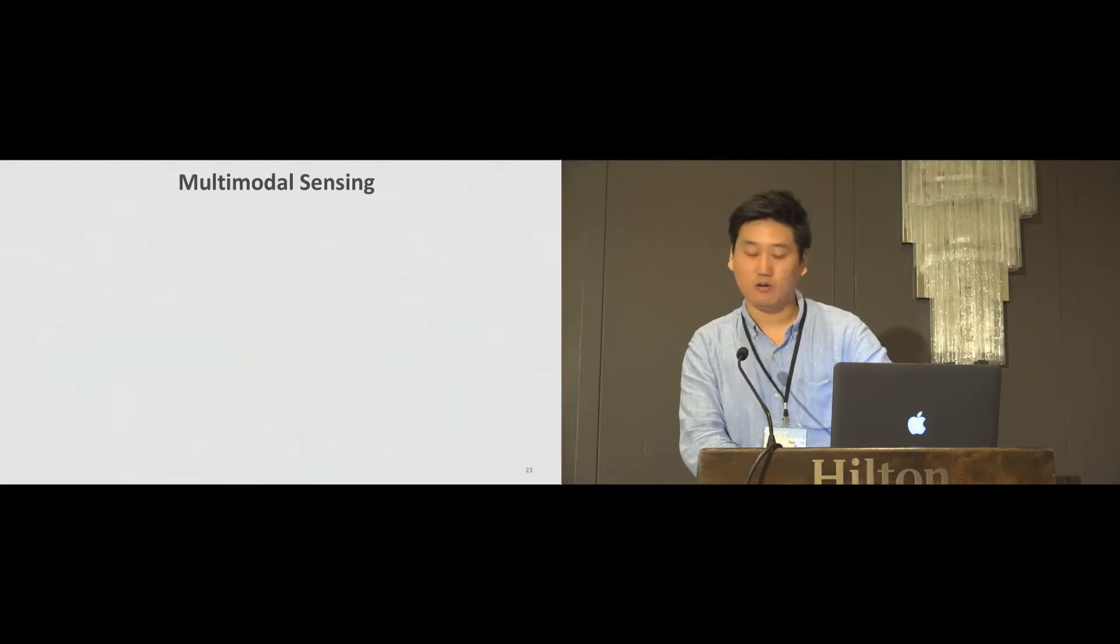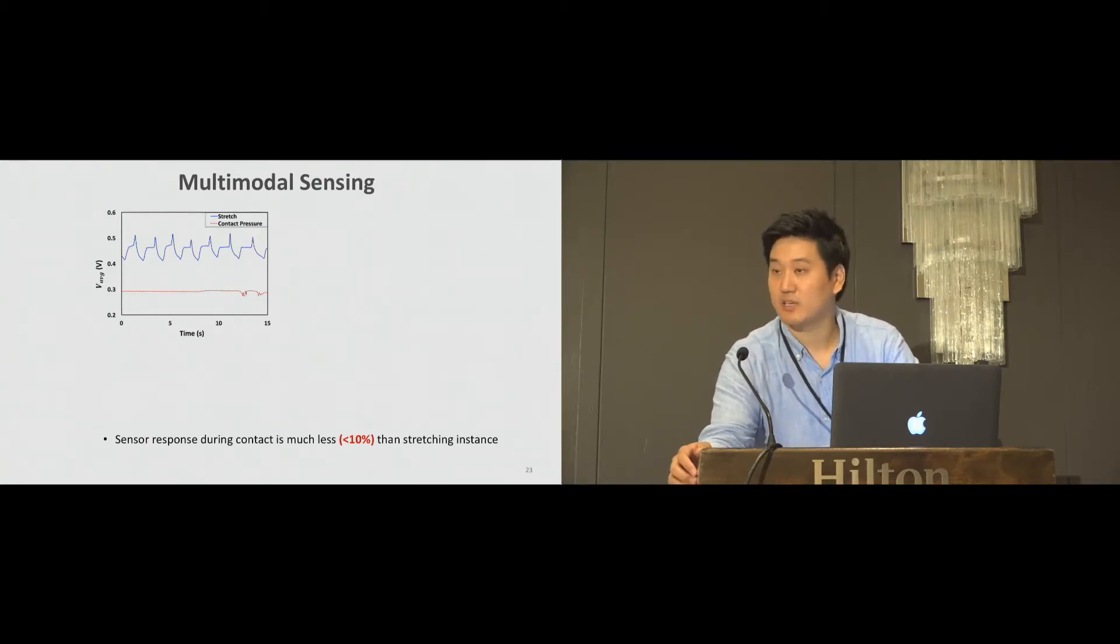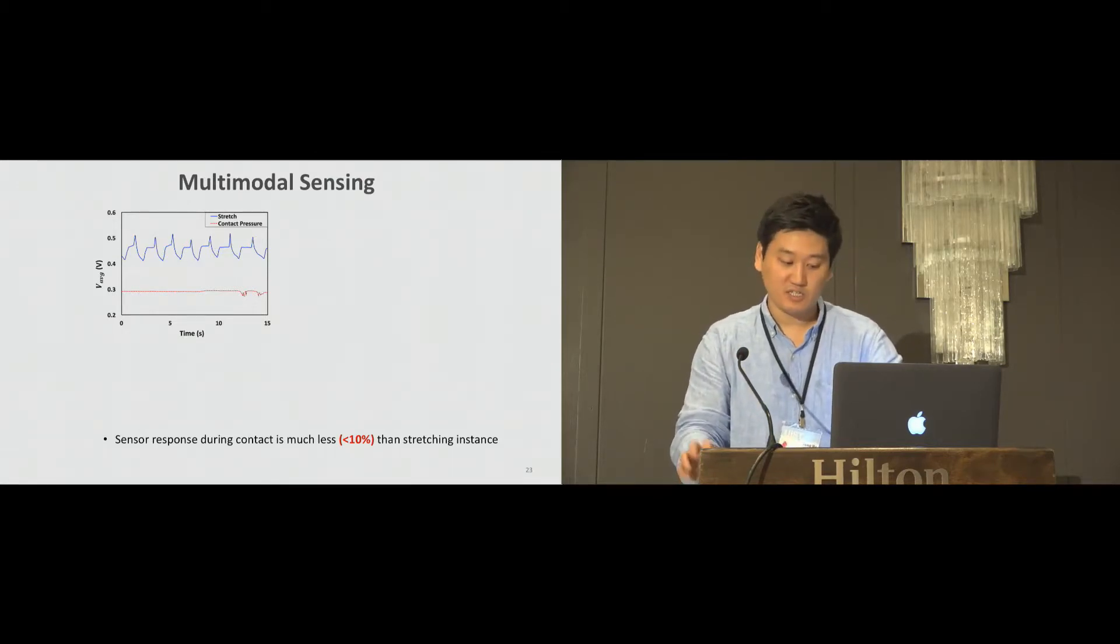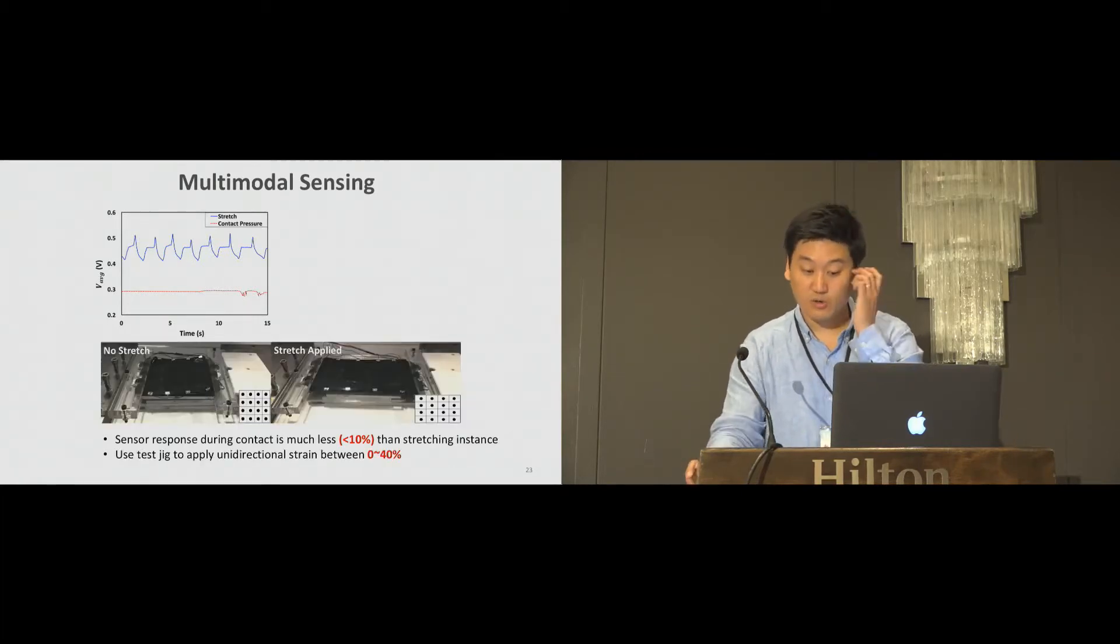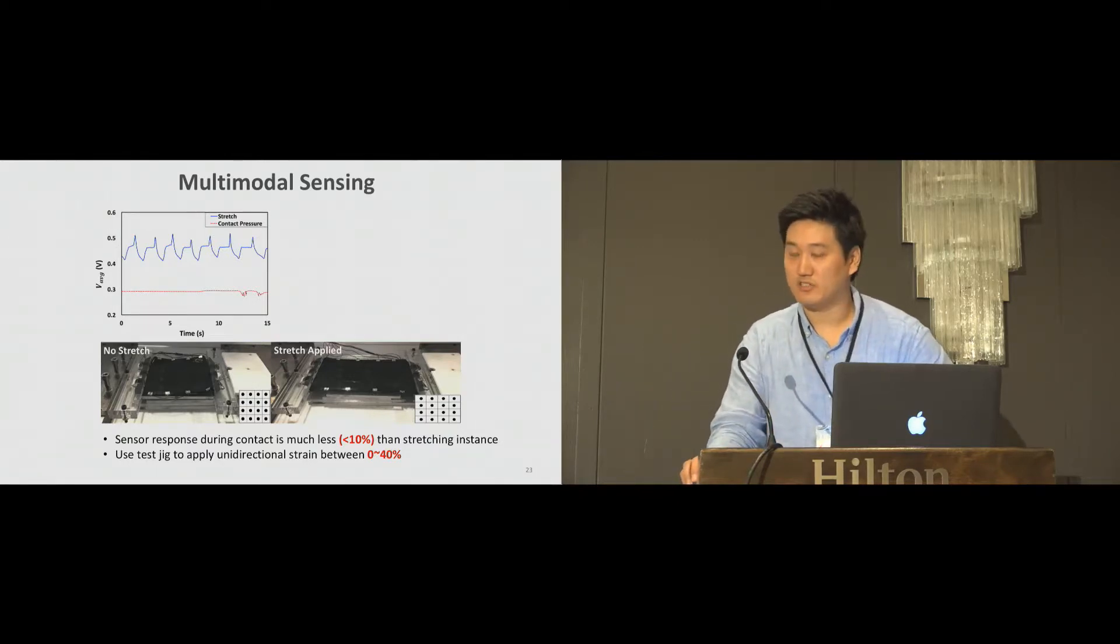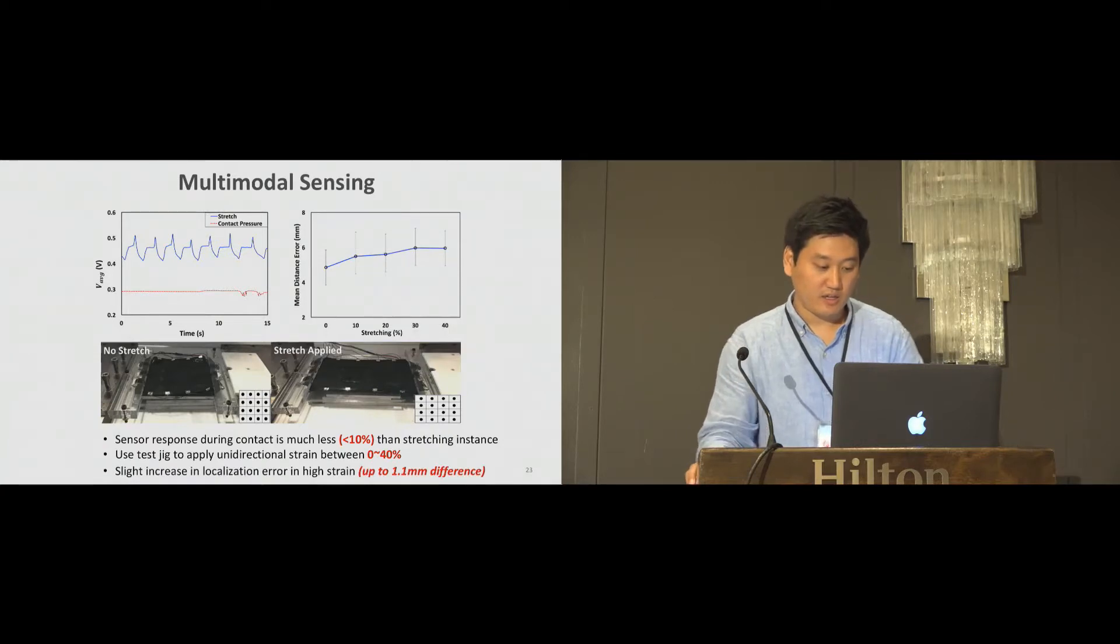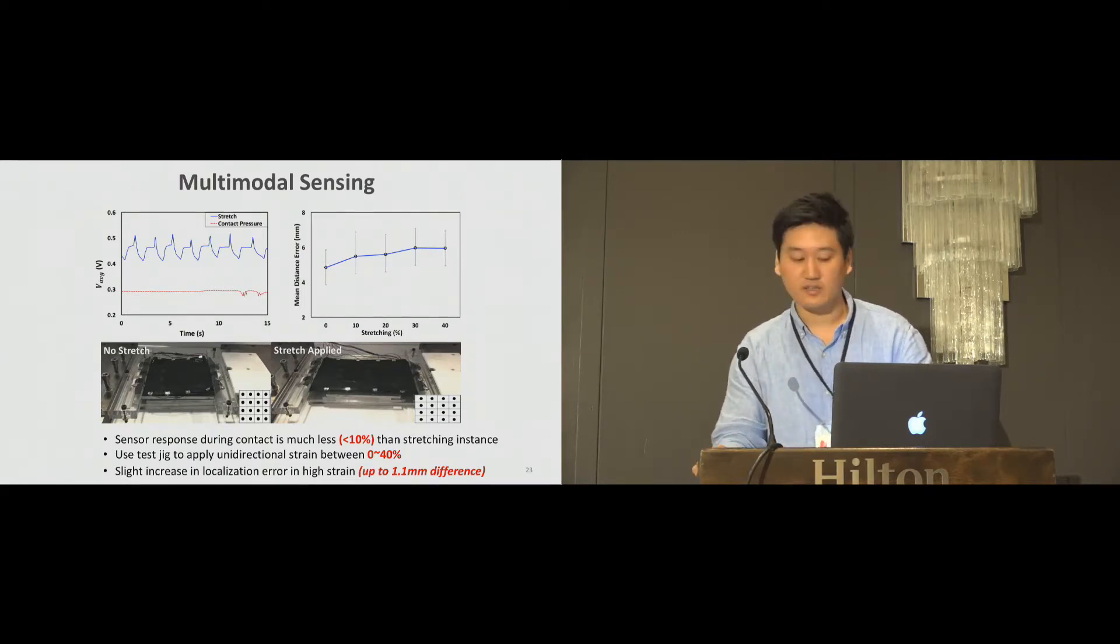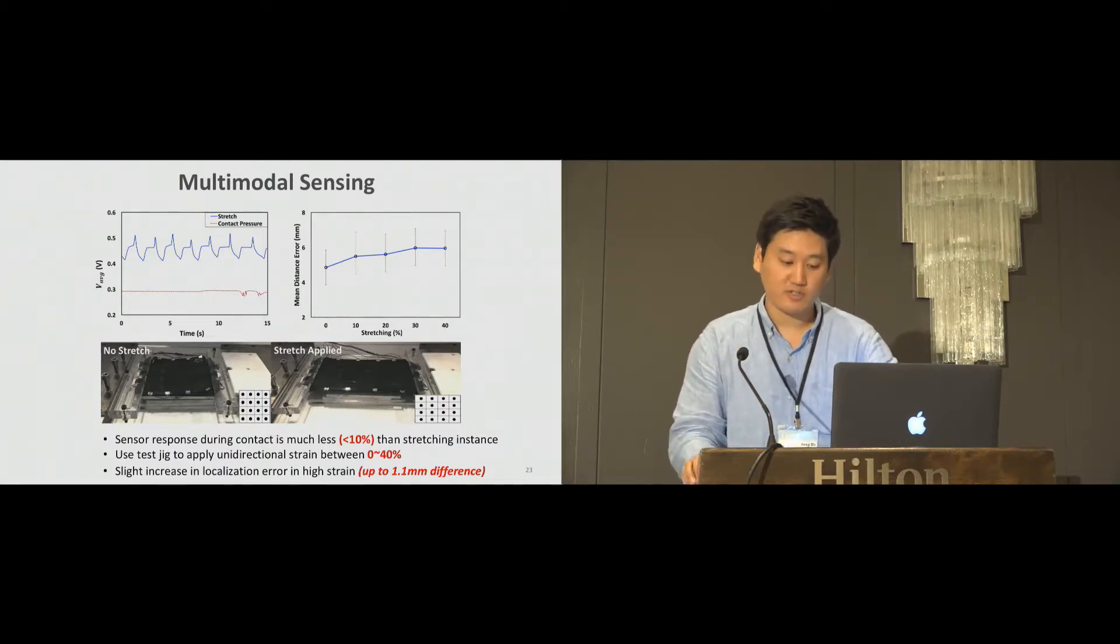We also check the feasibility of multimodal contact sensing and stretch sensing. First, we look at whether contact pressure can activate stretch sensing. As shown in this figure, the sensor values caused by contact sensing is much less than that of stretch sensing. Therefore, it is very hard to mis-trigger the stretch sensing due to contact sensing. We also investigate contact localization under stretching. We use a test jig to apply unidirectional stretch up to 40 percent. We found there is a slight increase in localization error, about 1.1 millimeters difference when the material itself is stretched 40 percent. This shows that localization still works robustly under high strain.